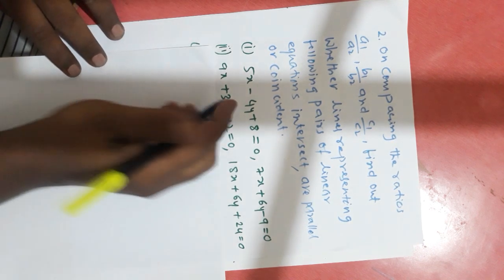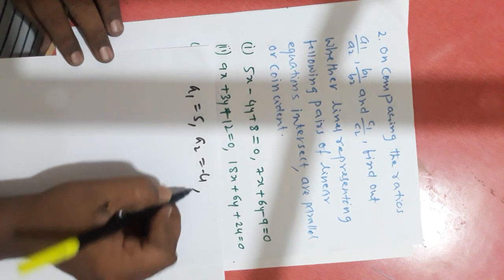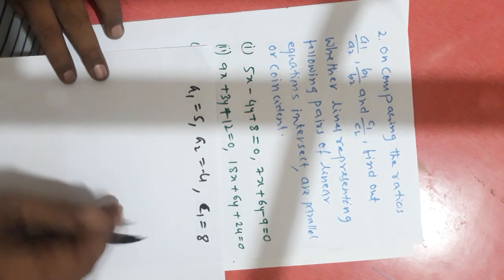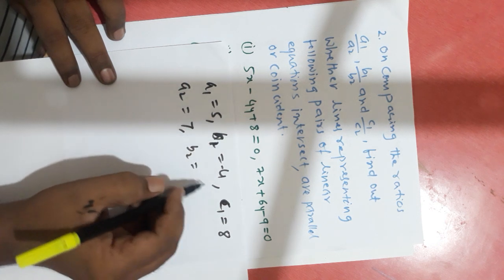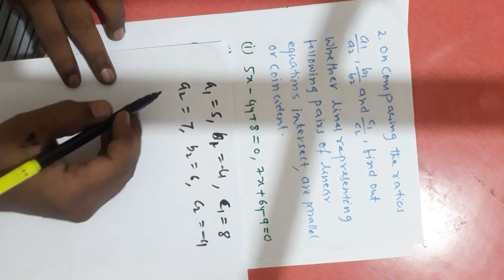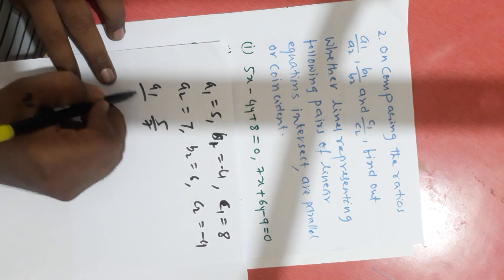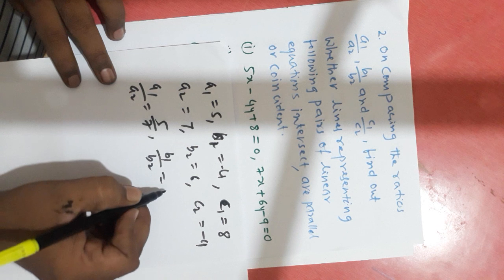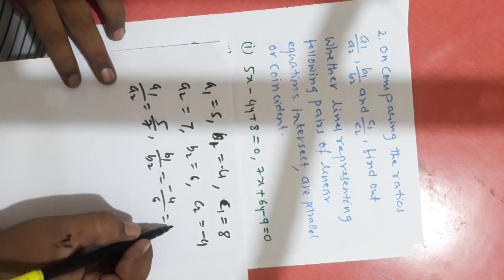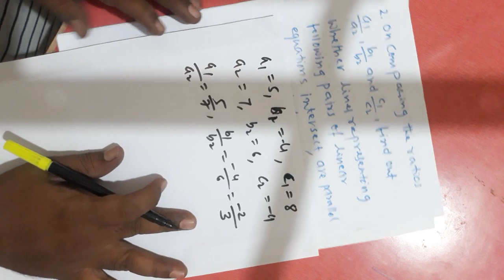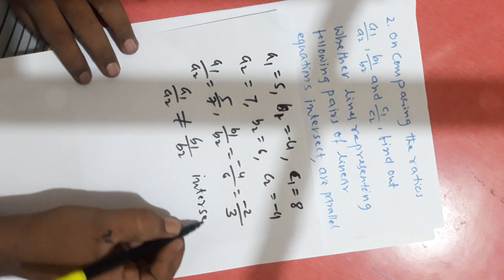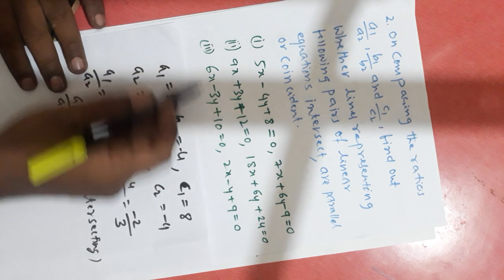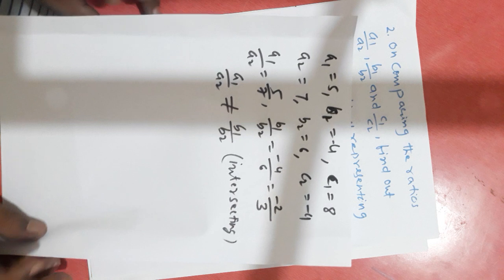For the first set of equations: a1 is 5, a2 is 7; b1 is minus 4, b2 is 6; c1 is 8, c2 is minus 9. Computing a1 by a2 gives 5 by 7, and b1 by b2 gives minus 4 by 6, which simplifies to minus 2 by 3. Clearly a1 by a2 is not equal to b1 by b2, which means these lines are intersecting lines.